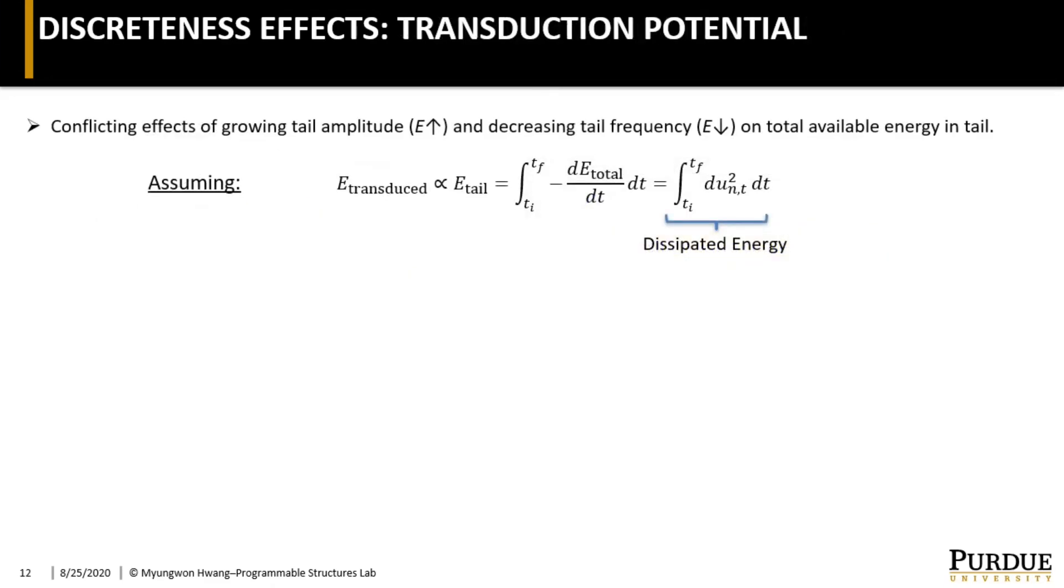Now let's have a look at the discreteness effect on the transduction capability. There is a conflicting effect between the growing tail amplitude and the decreasing tail frequency. For a qualitative measure, let's assume that the transduced energy is proportional to the available energy in the tail, which can be numerically obtained by integrating the dissipated energy for the duration of the tail motion. This gives a transduction potential curve. Here I plotted the tail energy per unit cell versus lattice spacing distance, but a very similar trend still remains even if I plot the tail energy per length instead.